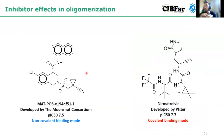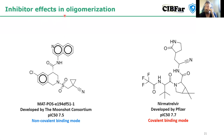After that, we decided to study the effect of inhibitors on oligomerization, which was different from what everyone else was studying. We conducted the study with two molecules: one was MAT-51, developed by the Moonshot Consortium with a pIC50 of 7.5.